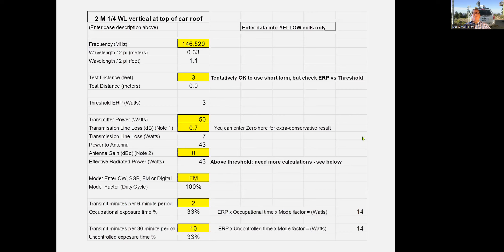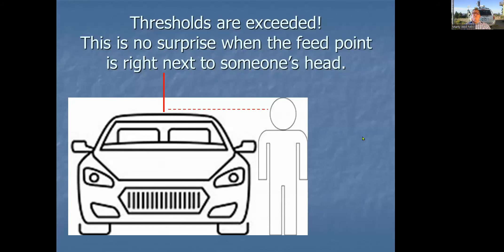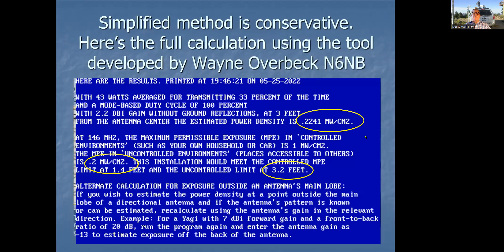That suggests we need to change something. The rooftop antenna is basically right at head level for somebody standing next to you. I used Wayne N6NB's calculator for this same set of facts, and at three feet the estimated power density came out at 0.22 milliwatts per square centimeter. The limit for uncontrolled environments is 0.2 milliwatts, so we're just over the edge. His calculator says you'd be okay if you keep people 3.2 feet away instead of three feet.